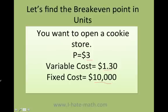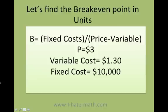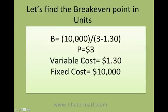The fixed cost is ten thousand dollars. I need to figure out how many cookies I need to sell in order to break even — that means covering at least my variable and fixed expenses. The formula is: fixed cost divided by price minus variable cost. The fixed cost is ten thousand dollars, price is three dollars, and variable cost is one dollar thirty.